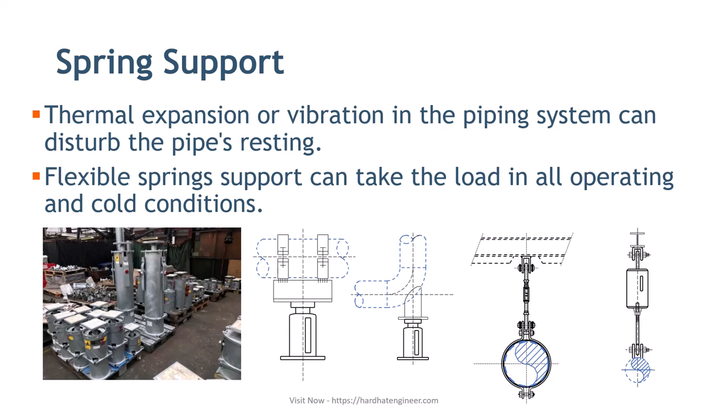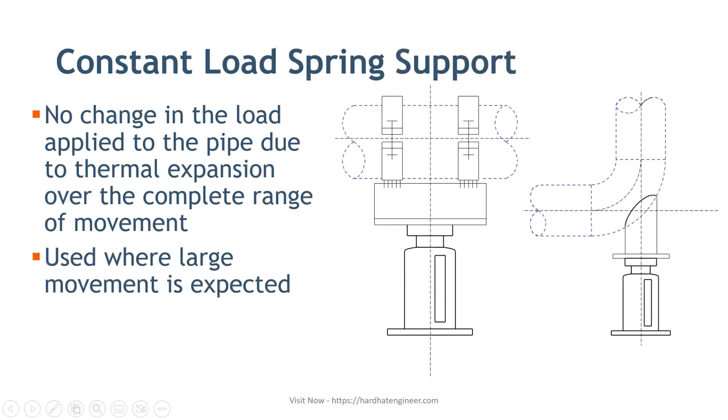Two types of spring supports are used in piping: constant load and variable load. In the constant load spring support, as the name suggests, there is no change in the load applied to the pipe due to thermal expansion over the complete range of movement. In simple words, it is like cruise control in your car.